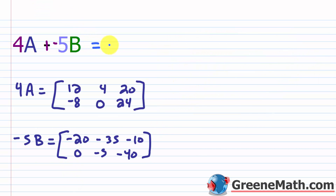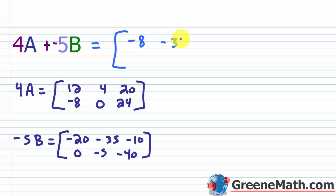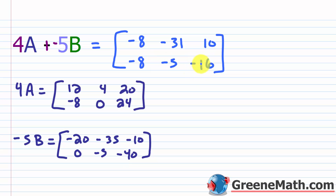Now we add four A plus negative five B. Both are two by three matrices, so we add corresponding entries: twelve plus negative twenty is negative eight, four plus negative thirty-five is negative thirty-one, twenty plus negative ten is ten, negative eight plus zero is negative eight, zero plus negative five is negative five, and twenty-four plus negative forty is negative sixteen. This matrix is the result of four A minus five B.